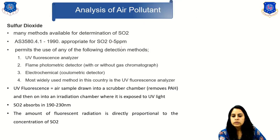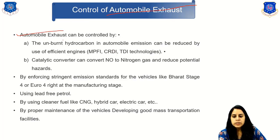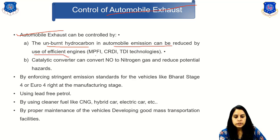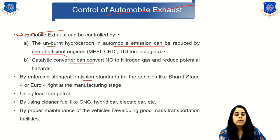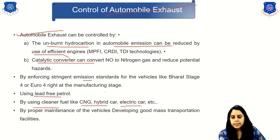The control of automobile exhaust includes: reducing unburnt hydrocarbons by using more efficient engines; using catalytic converters to convert nitrogen oxides to nitrogen gas; enforcing emission standards such as Bharat Stage 4; using lead-free petrol; using clean fuels such as CNG, hybrid cars, and electric cars; and proper maintenance of vehicles or developing good mass transportation facilities.